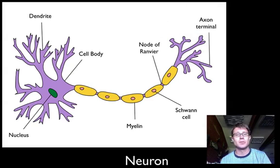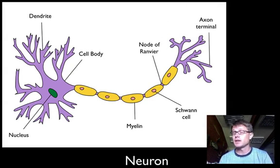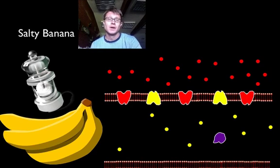At the end of the axon we have a terminal. What comes next is the synapse — a gap between this neuron and the next one connected right there.